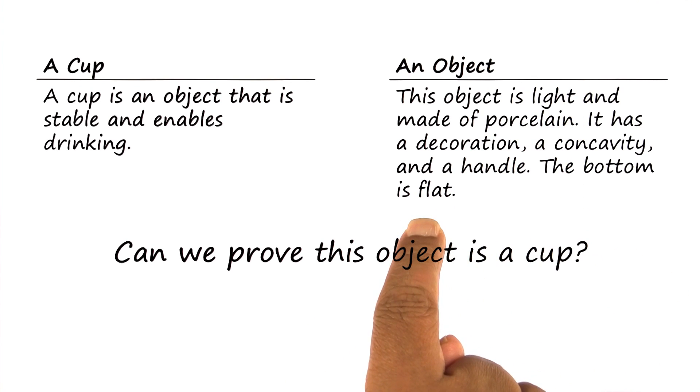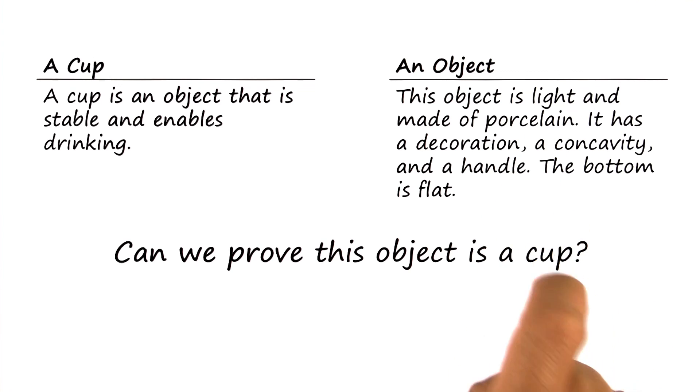One particular object has this description: the object is light and made of porcelain, it has decorations, a concavity, and a handle, and the bottom of this object is flat.